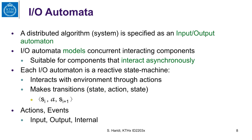A distributed algorithm, which is a system, is specified by an input-output automaton. IO, or input-output automata, models concurrent interactive systems. It is suitable for components that interact asynchronously, and each input-output automaton is a reactive state machine.